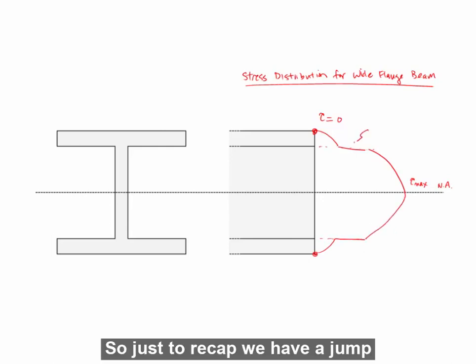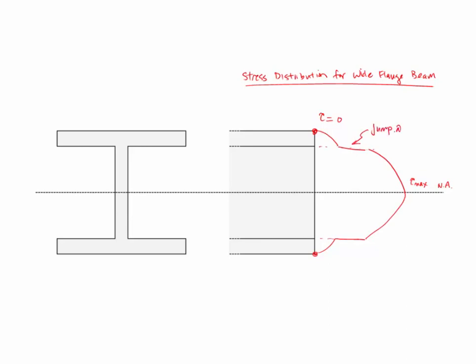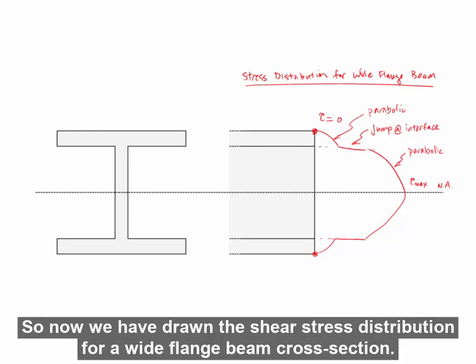So just to recap, we have a jump at the interface, and our distribution is parabolic over the rest of the section. So now we have drawn the shear stress distribution for a wide flange beam cross section.